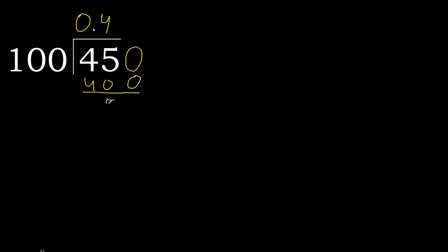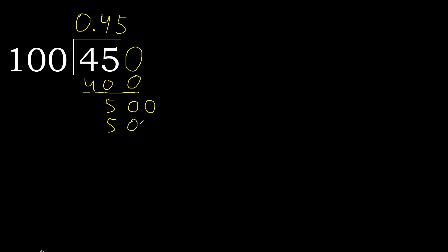Subtract. Next — there is no number, therefore complete. Always complete with 0. Point is here. 0 point. 500. 100 multiplied by 5 is 500. Subtract: 0, 0. Therefore finish it.